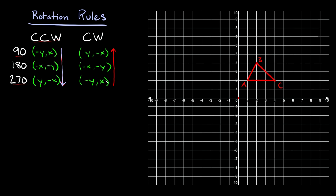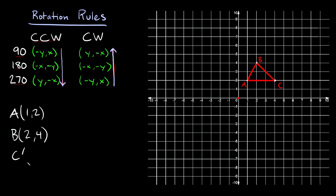To actually rotate using these rules, the first thing you have to do is write down the coordinates of each of the points on whatever shape you're trying to rotate. Here we have a triangle with three points A, B, and C. So A is at (1, 2), B is at (2, 4), and C is at (4, 2).